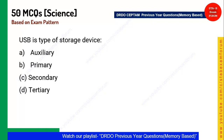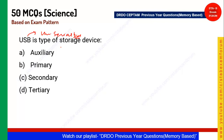USB stands for Universal Serial Bus. It is a storage device commonly known as a pen drive or flash drive, and it is a secondary storage device.